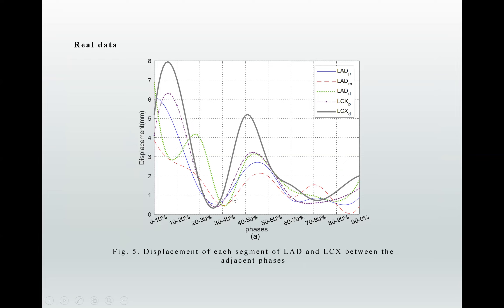We calculate the displacement degree for these segments. We can see here and here, this displacement degree is small, which is consistent with our physiological knowledge, because these times are always the end of systolic and diastolic time in our cardiac cycle.